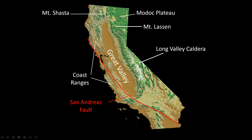The Modoc Plateau is its own province, and then we have the Cascades, which starts at Mount Lassen in northeastern California and extends to Mount Shasta and then to the volcanoes that head to the northwest Pacific.